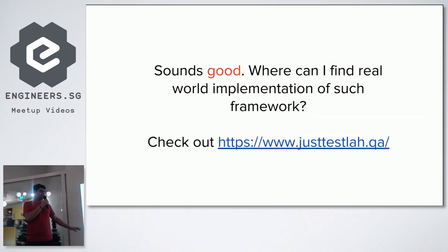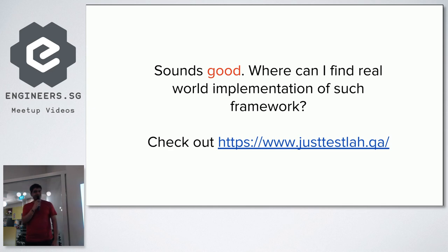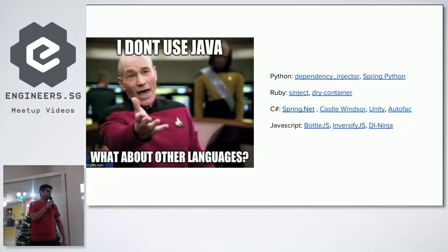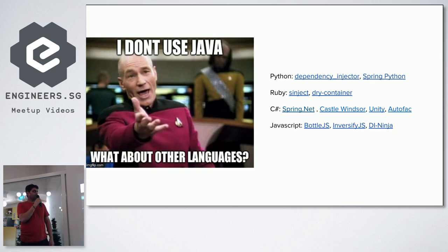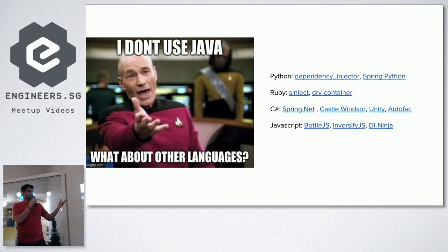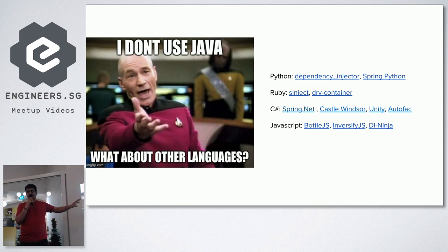All of this has been specific to Java, but what about other programming languages? For Python, you can use dependency-injector or Spring Python. For Ruby, there's Synject and dry-container. For C#, options include Spring.NET, Castle Windsor, Unity, and Autofac. For JavaScript, you have Bottle.js, InversifyJS, and di-ninja. This is not an exhaustive list — you can find many more on the internet.